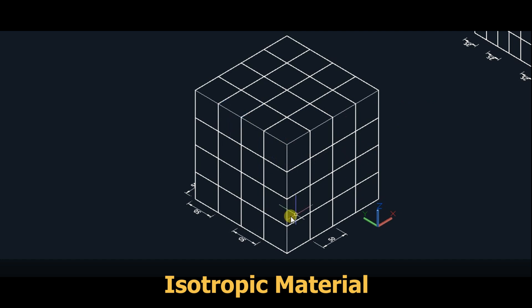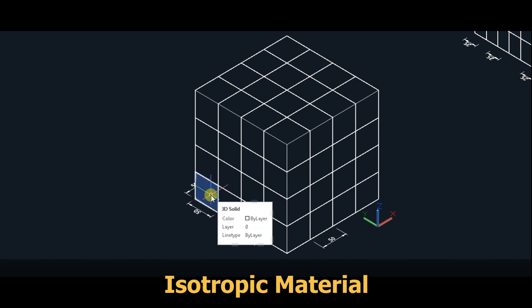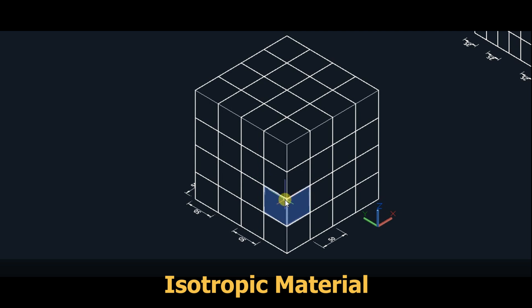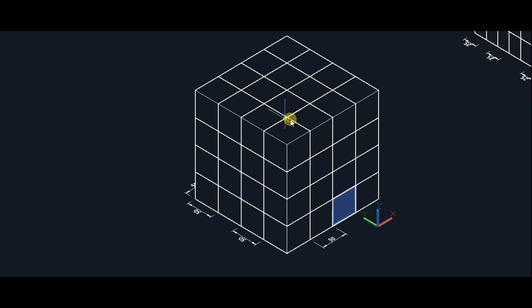So this is both homogeneous and isotropic, because its properties are same throughout the body of the material — at all points it is same, and also in both the directions it is same. So this material made up of the square blocks can be termed as a homogeneous and isotropic material, because in all the directions it is same, and at all the points it is same.